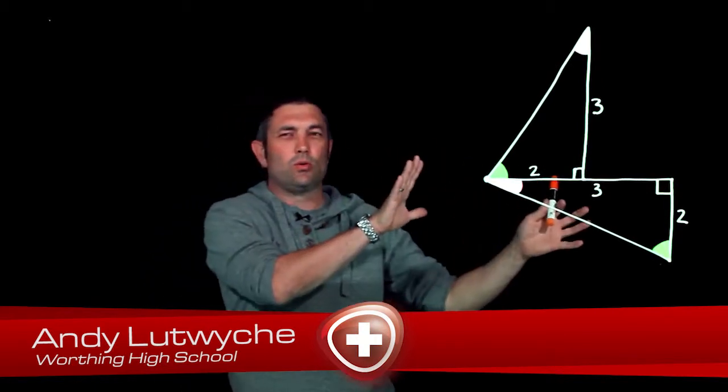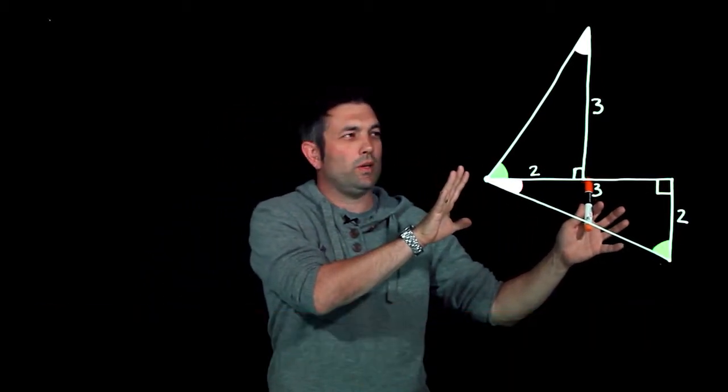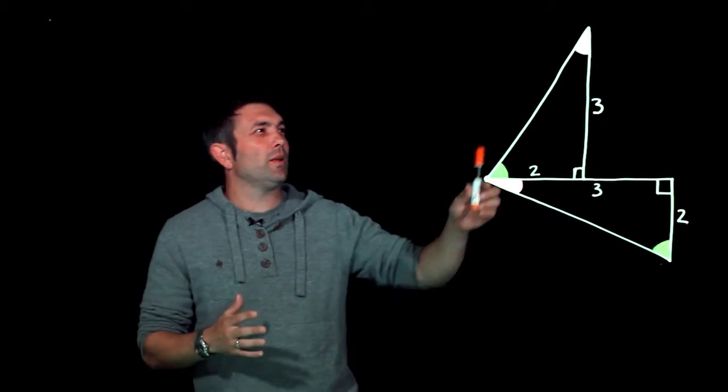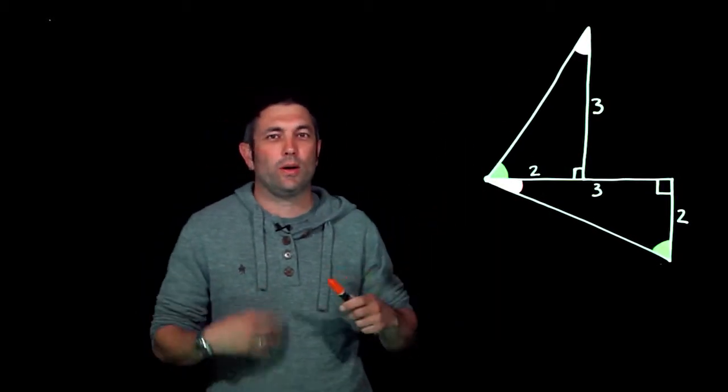Right now we're looking at lines and we've got these two triangles here. You'll see why they're relevant in a second. Now what do we notice about these triangles? Well, they're both congruent. Now if you don't know what congruent means...